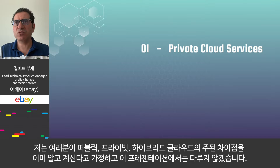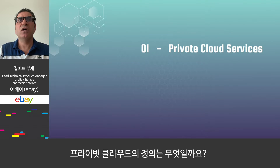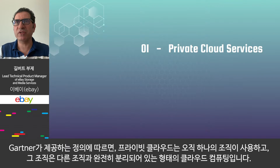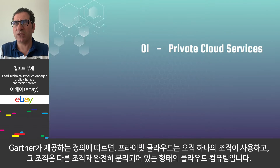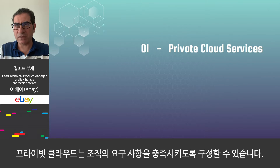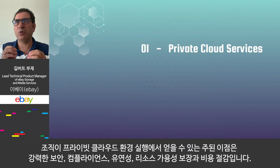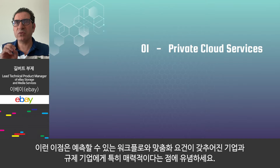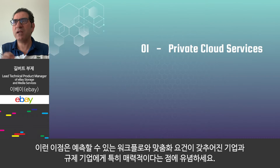First section: private cloud services. I'm assuming that you already know the main difference between public, private, and hybrid cloud, so I will not cover them during this presentation. Private cloud — what is the definition? The definition I'll be referring to was provided by Gartner: the private cloud is a form of cloud computing used by only one organization, ensuring that organization is completely isolated from others. The private cloud can be architected to meet that organization's specific needs. The main benefits are strong security, regulatory compliance, flexibility, guaranteed resource availability, and cost savings. These benefits are particularly valuable for businesses with predictable workloads, customization requirements, and businesses in regulated industries.